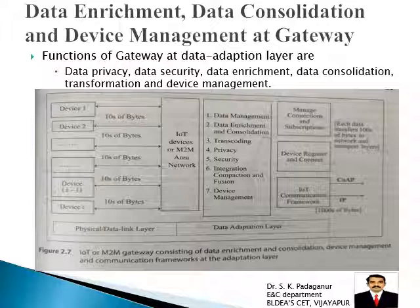This color diagram illustrates the adaptation layer and how the gateway interfaces devices with the internet. All the IoT devices generate very small amounts of data — tens of bytes — while the internet operates at thousands of bytes. All devices connect to the gateway, which performs processing and then sends the data to the internet. These functions are called data enrichment, data consolidation, and device management.